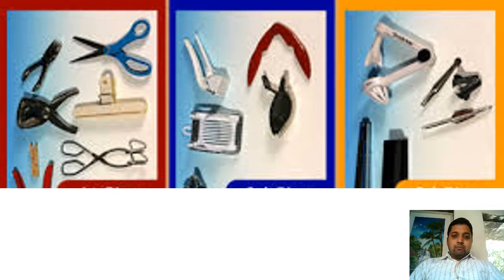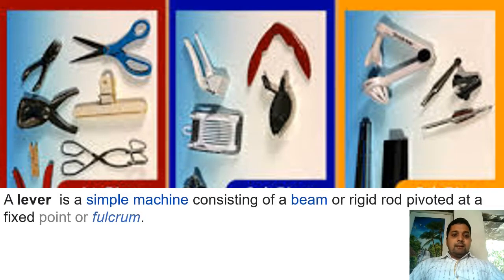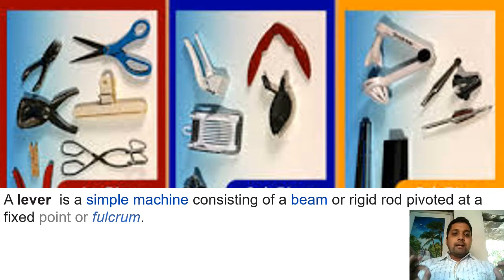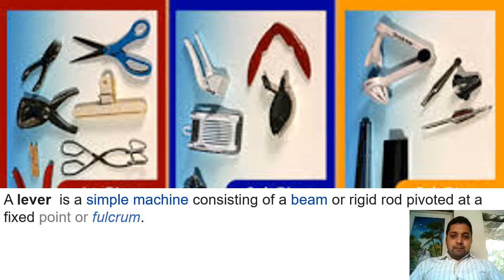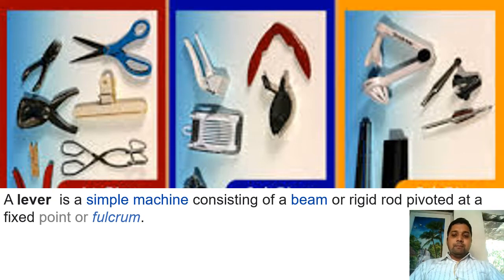A lever is a basic simple machine. It consists of a rigid rod fixed at a point called a fulcrum. Examples include a nail cutter, stapler, scissors, tongs, and pliers — all fall in the category of levers. Each has a pivot point or fixed joint; one side you apply your effort or force, and on the other side the object on which the force acts is placed.